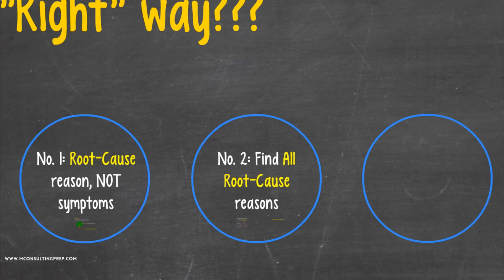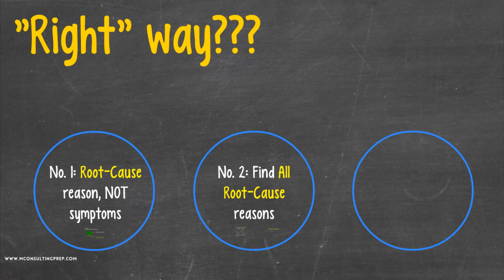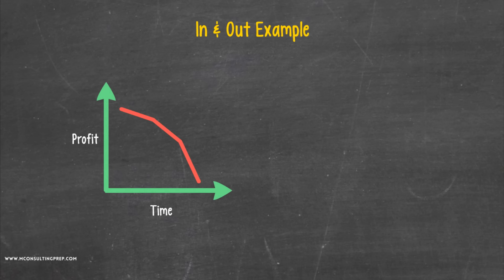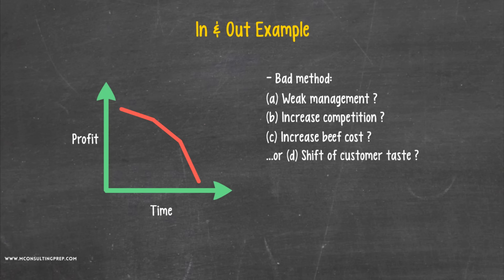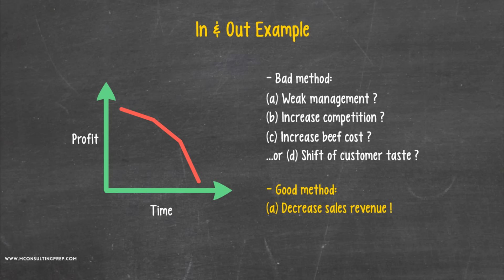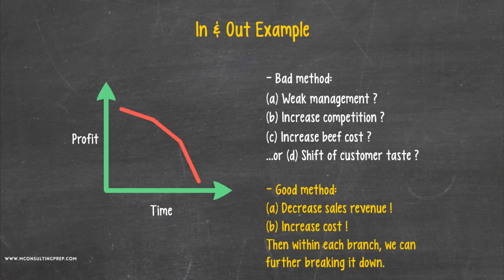Some MECE ways to break down a student body are male and female, or international students and domestic students. Now back to the original story. We were discussing the second component of a good method in case interviews — breaking down any big problem into smaller pieces in a MECE way. Here's a bad method: could declining profitability be due to weak management, increase in competition, increase in beef costs, or shift of consumer tastes? While all of the above can be root causes, that's not a MECE breakdown. Here's a good method: declining profitability is either caused by A, decreasing sales revenue, or B, increasing cost — and within each branch, we can further break down.